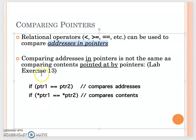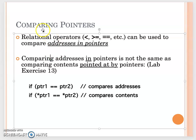We need to be careful. Sometimes when we're using the pointer variable, it refers to the address. But sometimes we can use the dereference operator — the asterisk. When you use the asterisk, you are comparing the variable that the pointer refers to. That's why there are two different kinds of comparisons.